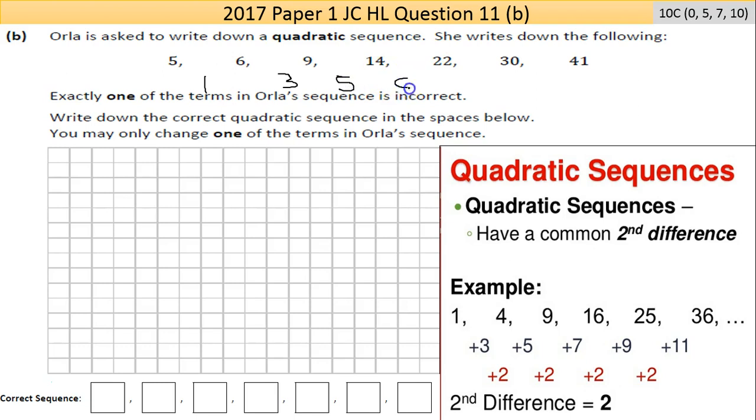14 and 22 is 8. 22 and 30 is also 8. And 30 and 41 is 11.